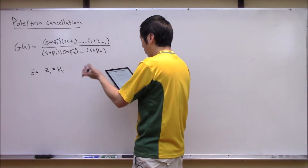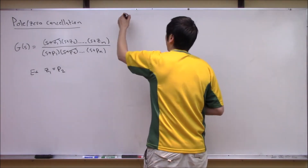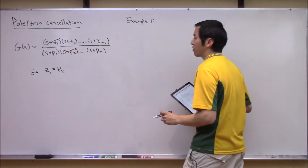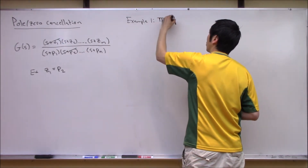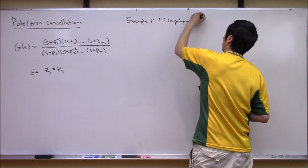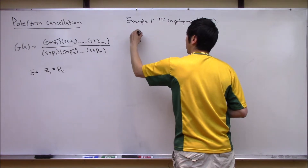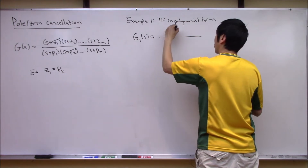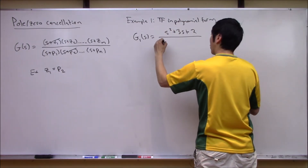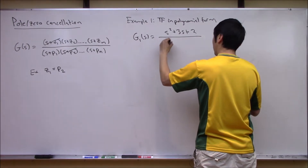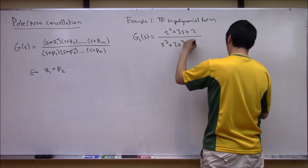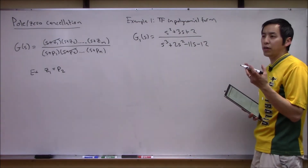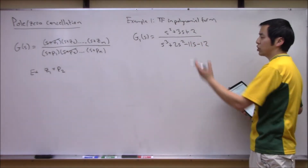While this is pretty obvious, the problem arises when we have the transfer function in polynomial form rather than factored form. For example, consider G1(S) given by (S² + 3S + 2) / (S³ + 2S² − 11S − 12). By looking at this, you couldn't tell if there's any pole-zero cancellation going on — we actually have to factor it.